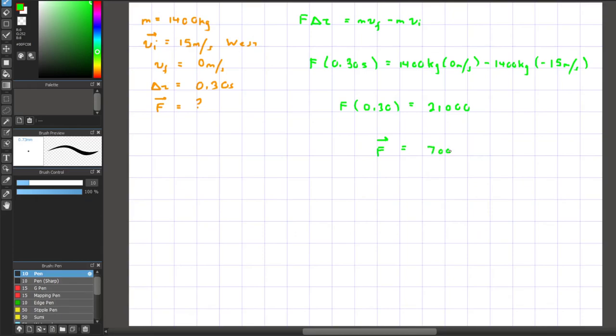The reason it's east is if the object was originally traveling west, for it to come to a stop, there must be a force to the exact opposite of it.